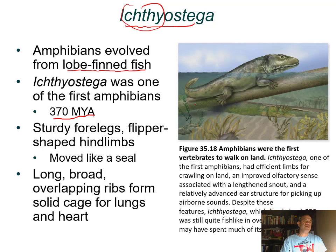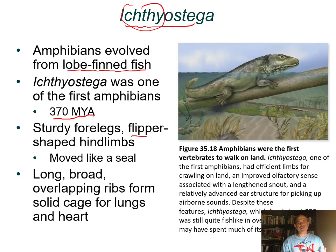Ichthyostega had flipper-shaped limbs and probably moved around more like a seal or sea lion. It also had broad overlapping ribs forming a solid-type rib cage to help protect vital organs like the lungs and heart.